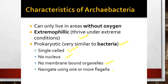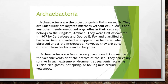Their locomotory organ is one or more flagella. Archibacteria are one of the oldest microorganisms surviving on the Earth. They are unicellular prokaryotes without a cell nucleus and without any organelles. They belong to the kingdom Archi. They were first discovered in the year 1977 by Carl Woese and George E. Fox, who classified Archi into the category of bacteria.